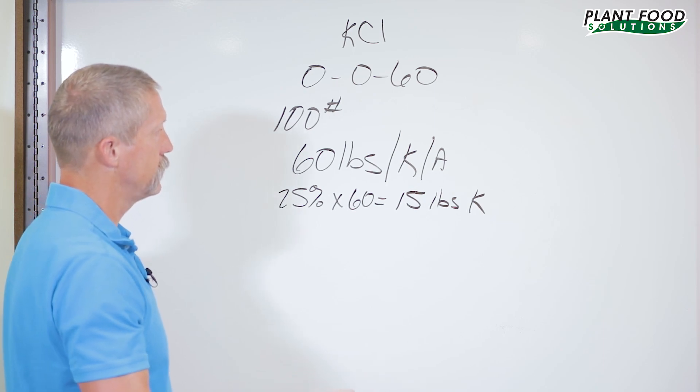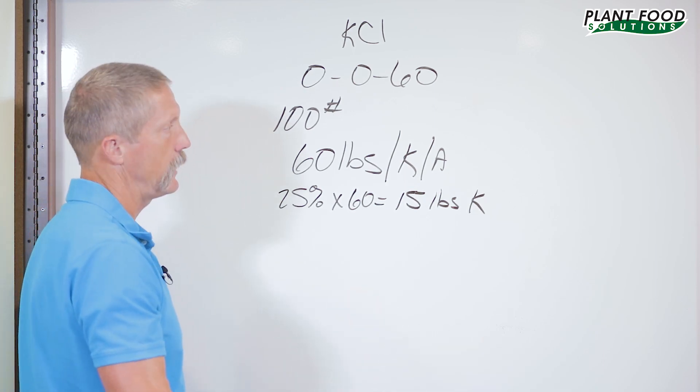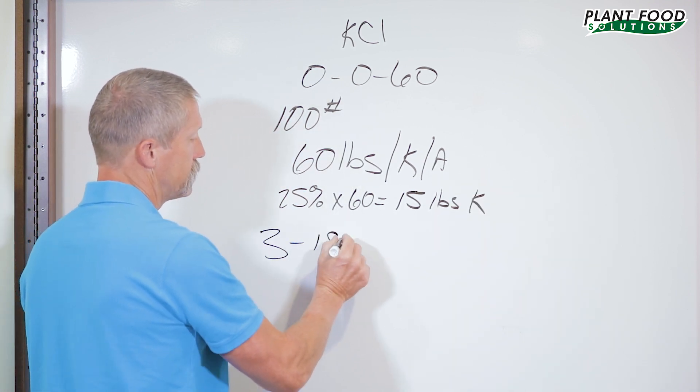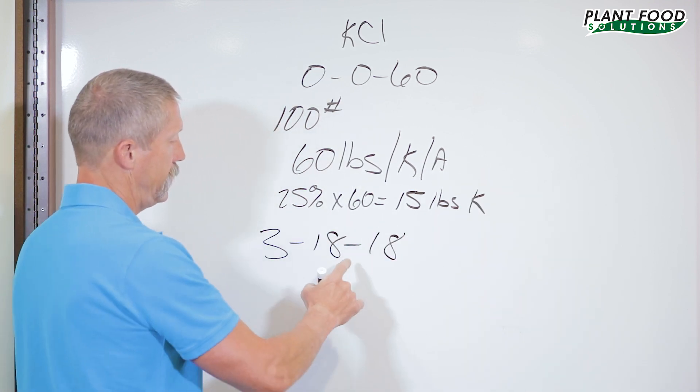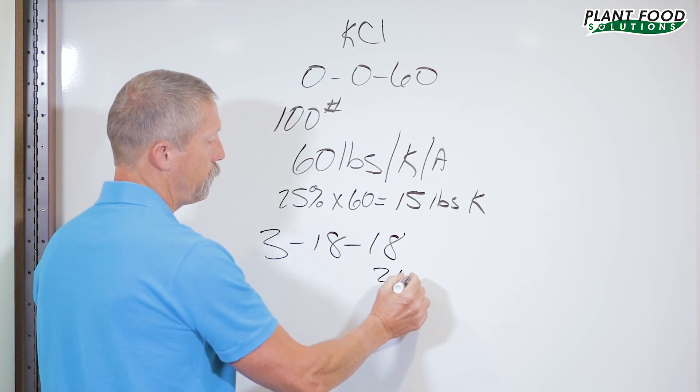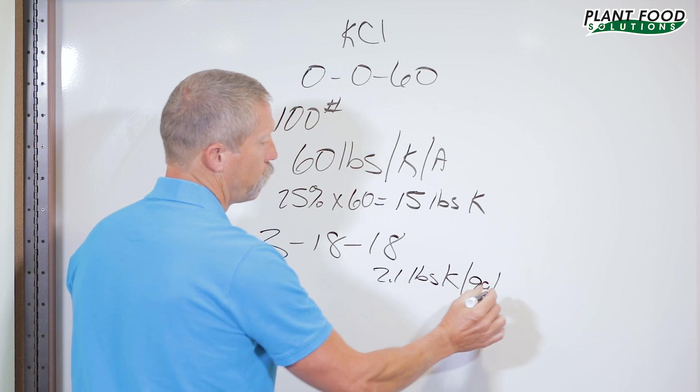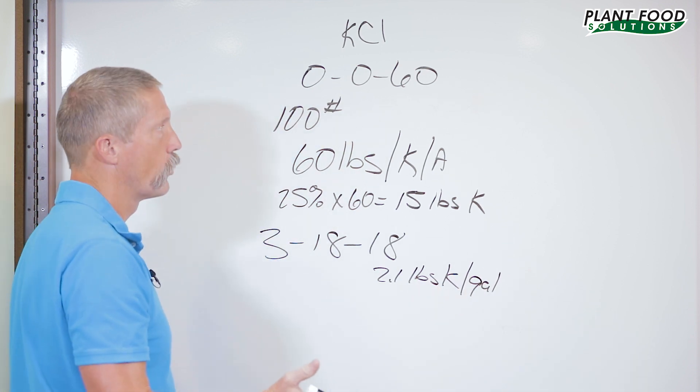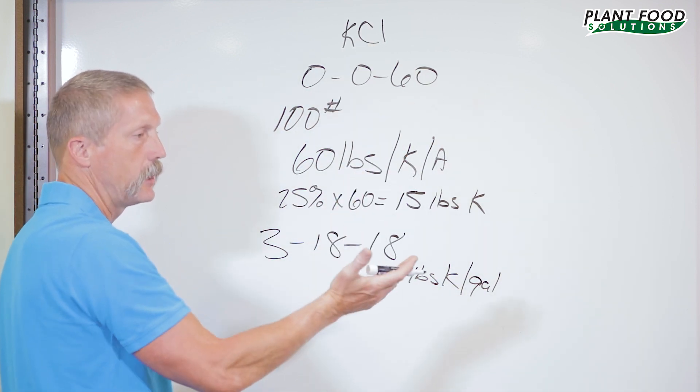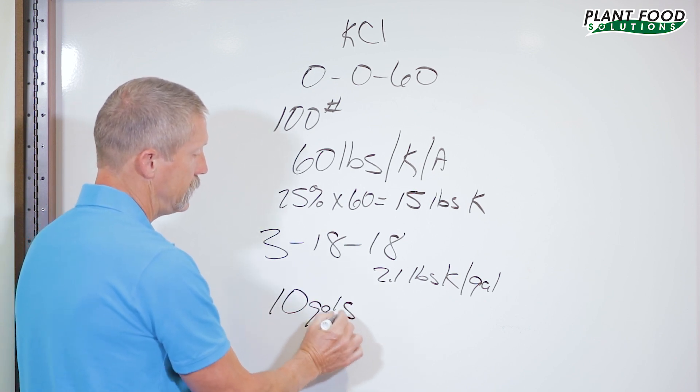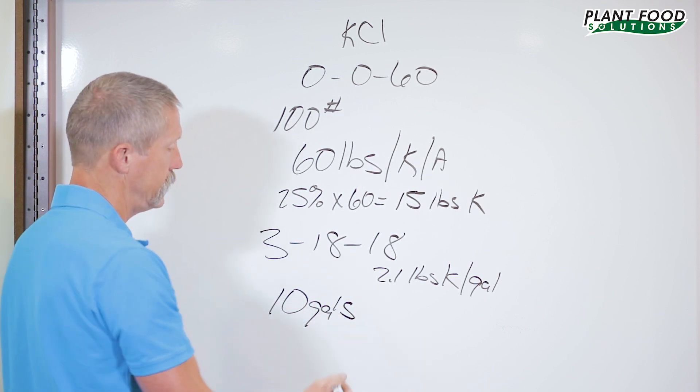For instance, if you're using a liquid product, a 3-18-18, you're going to have 2.1 pounds of K per gallon. If we're going to try to grow 200 bushel corn, which would be equivalent to putting a hundred pounds of potash on, we're going to use 10 gallons of 3-18-18 per acre.